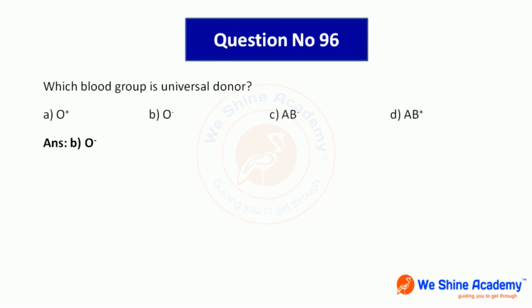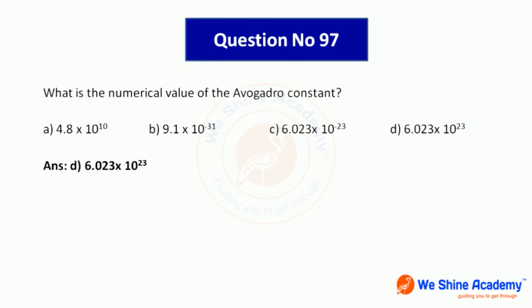Question 96: Which blood group is the universal donor? The blood group O negative is the universal donor. Answer option B, O negative.